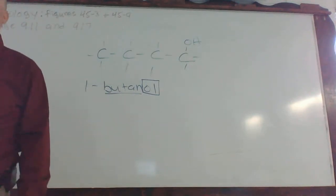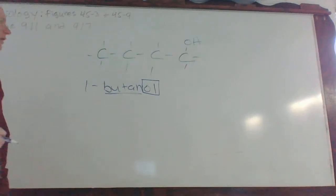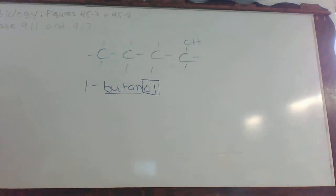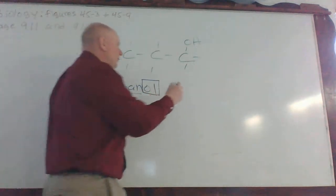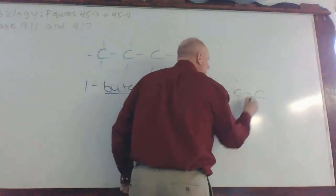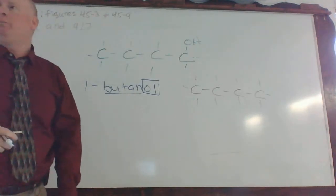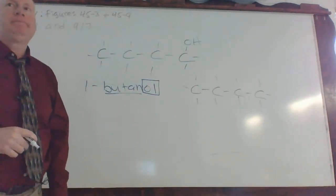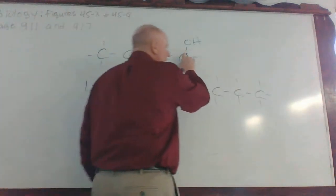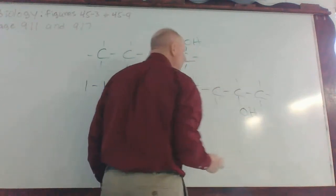So, what could a derivative, or not derivative, an isomer of one butanol be? Two butanol. So, what are we going to do? Still going to draw four carbons. But when you say two butanol, what do you say is moving? Yes. Instead of being on the first one, put them on the second one.